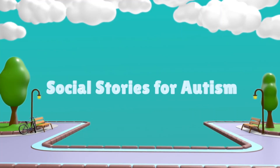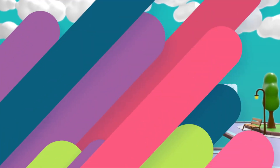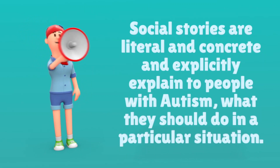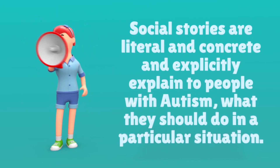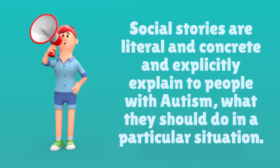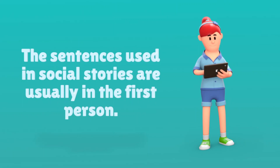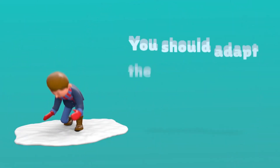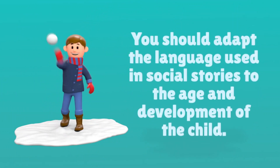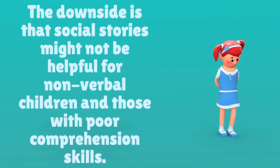Social stories are literal and concrete, and explicitly explain the social expectations and what a person should do in a particular situation. The sentences are usually written in the first person — for example, 'I will go to the shop, I will hold mummy's hand, there will be many different people I don't know there.' You should adapt the language to the age and development of the child. One downside is that social stories might not be helpful for non-verbal children or those with poor comprehension skills.